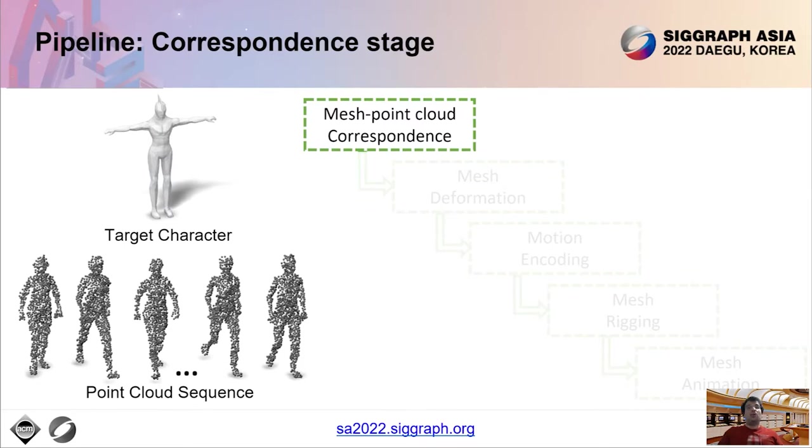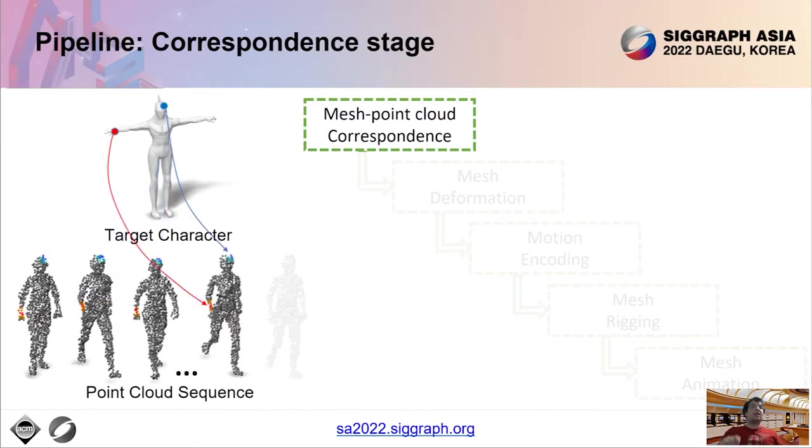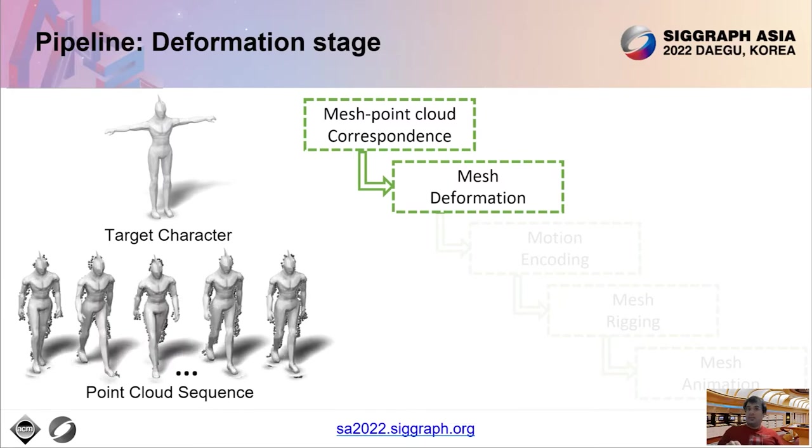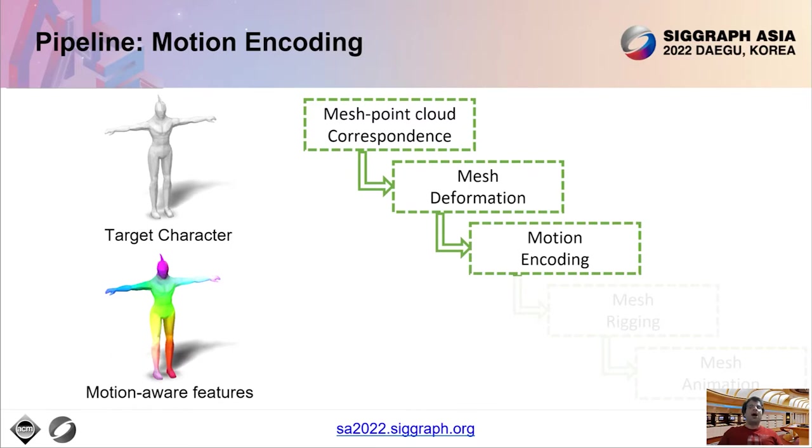Our pipeline processes the target character and point cloud sequence in a series of stages. In our first stage, our method computes partial correspondences between vertices of the target character and points in each frame of the input sequence, as you see here, for a couple of exemplar vertices. The correspondences are probabilistic. Each vertex corresponds to a fuzzy area in each point cloud frame. The correspondences are used in our next stage to drive a smooth deformation of the target mesh to input point cloud frames. The deformed meshes are processed by the motion encoding stage, which converts the per-vertex trajectories into compact feature representations. Vertices lying on the same rigid part acquire similar features as visualized at the bottom left here. Vertices with similar RGB colors have similar feature representations. These features basically reveal articulating parts like lower arms, upper arms, head. Different parts have distinctive colors.